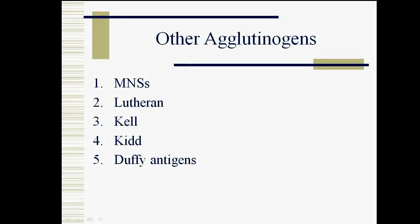There are a number of agglutinogen systems present in our blood circulation. First is the MNA system, second is the Lewis system, third is Kell, fourth is Kidd, and fifth is Duffy's antigens. These are a number of different specialized agglutinogens that are in our circulation.